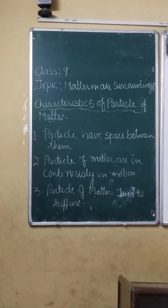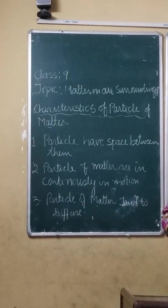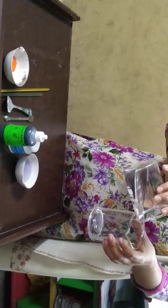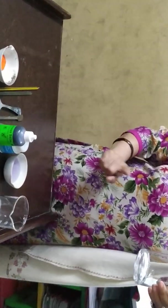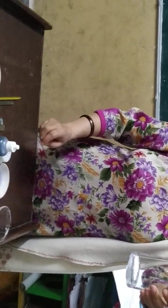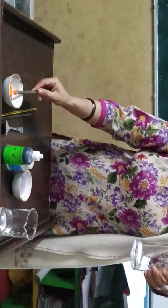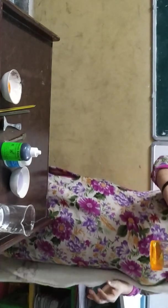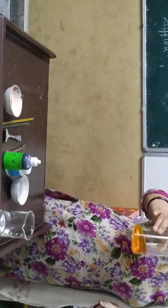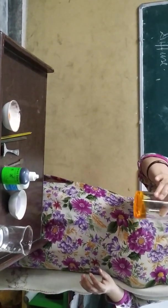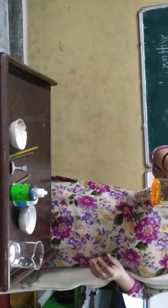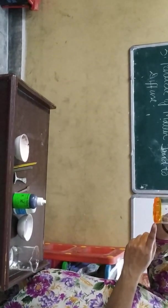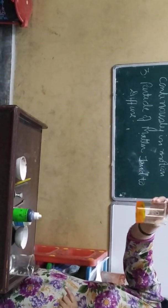To prove that particles actually have space between them, we are going to perform an activity. I have taken some amount of water. If there is space within the water, only then it will be able to dissolve a substance in it. So I will take some salt and dissolve it in water. You can find that this substance has completely dissolved in it — the salt which we mixed in the water has completely dissolved.